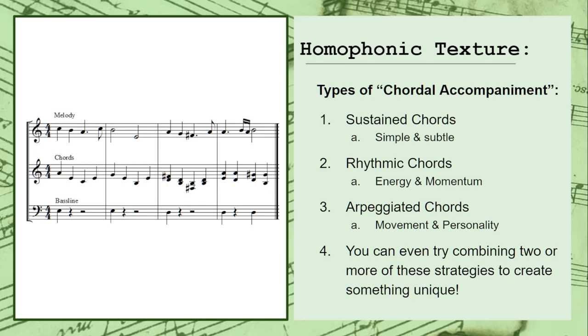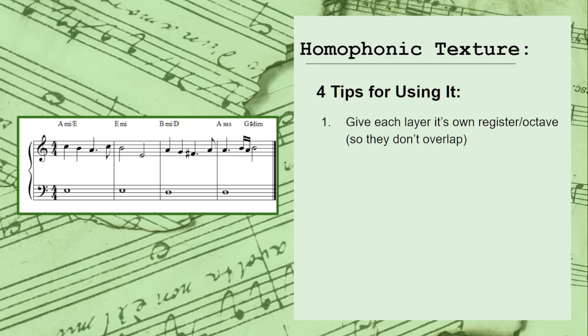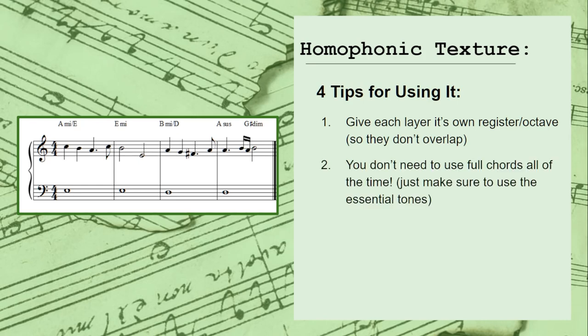To get the most out of the homophonic texture, there are four helpful tips to keep in mind. The first is to give each layer its own distinct register or octave so they don't overlap. This is particularly important when first sketching out your ideas, as it helps make sure that your music sounds clear and well-organized. Next, keep in mind that you don't need to use full chords all the time. Sometimes just focusing on a few essential tones that don't appear prominently in the melody or bass line can be more than enough.